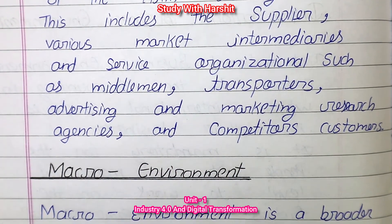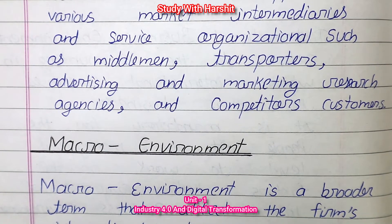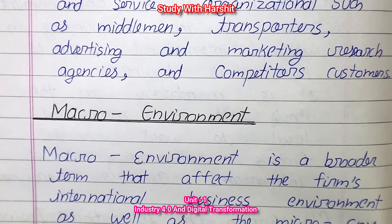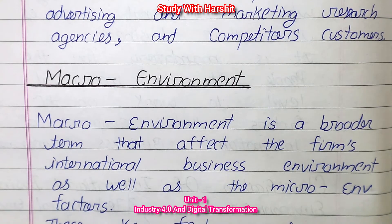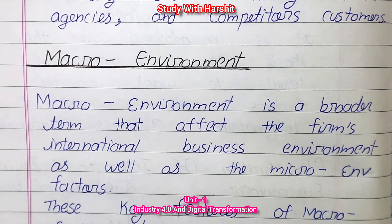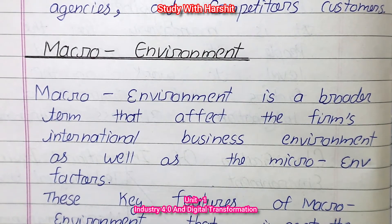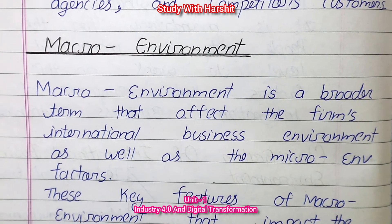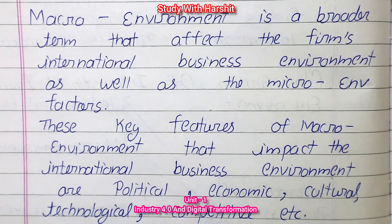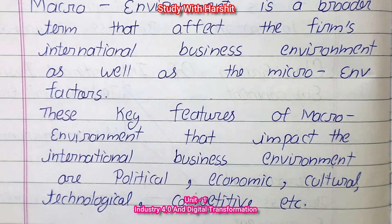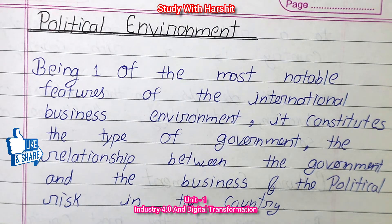Macro Environment: The macro environment is a broad term referring to factors that affect the firm's international business environment as well as micro environment factors. The key features of the macro environment that affect international business include political, economic, cultural, technological, competitive factors, and more.